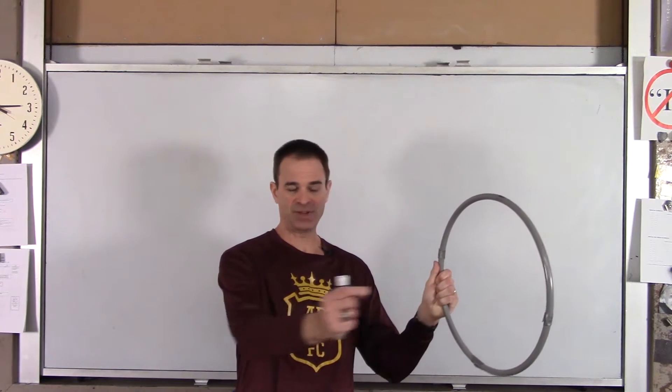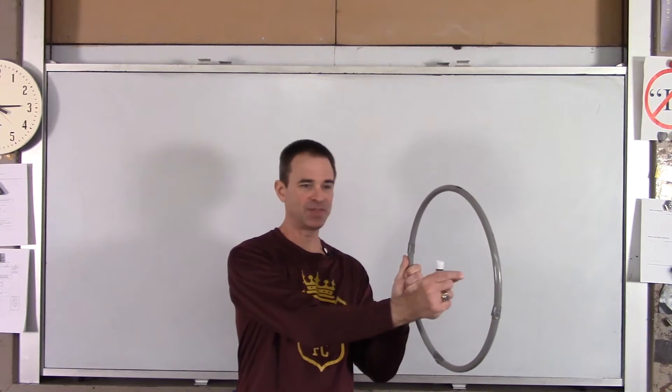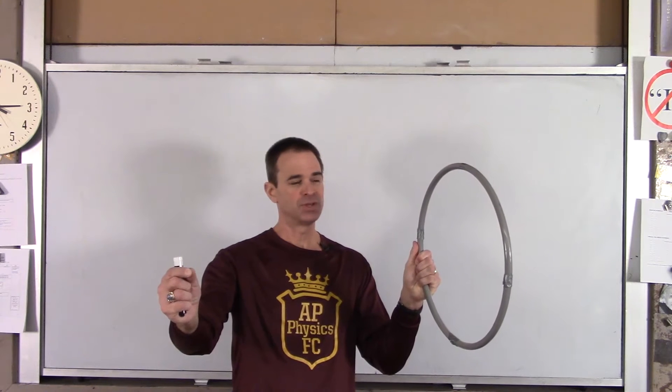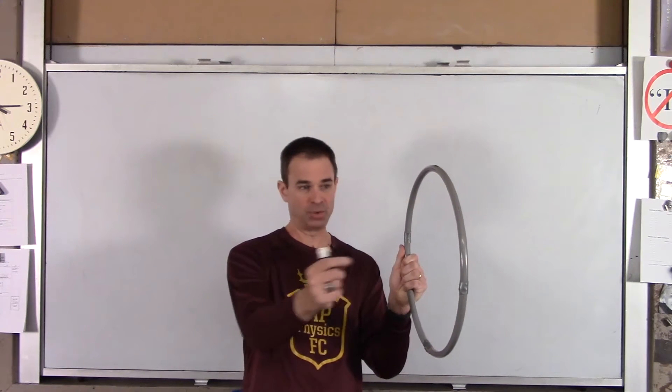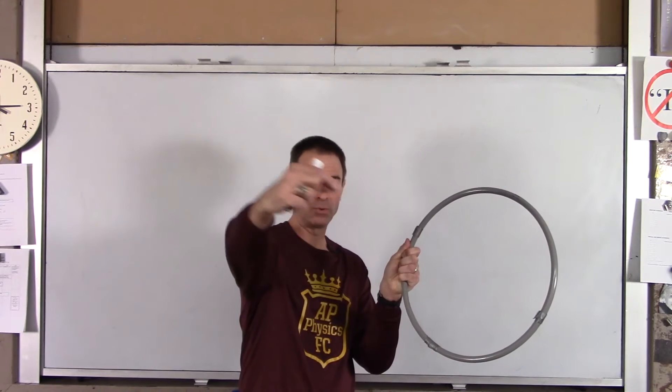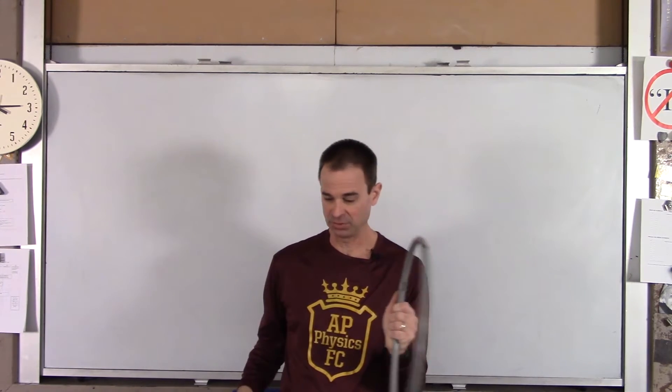We're going to find the voltage as a function of x along the axis of the ring. So imagine a line running through the center of the ring outward. We're going to find voltage as a function of x.